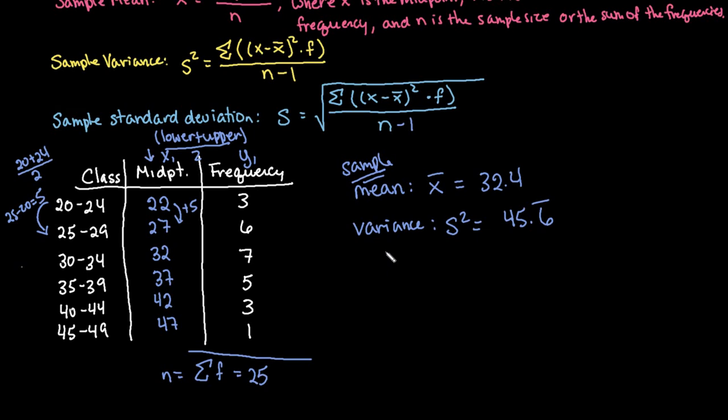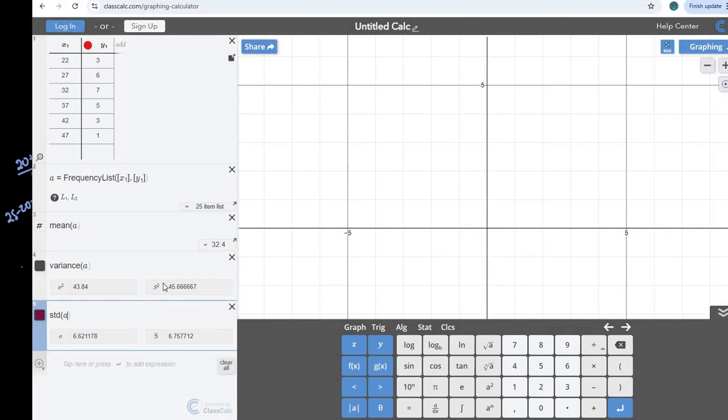And I'm just going to draw a line above that. But your rounding just depends on where they tell you to round it to. And then the standard deviation is going to be S, and that one's going to be approximately 6.758. And again, just be really careful on reading the questions to know if you're looking for a population or if you're looking for a sample.